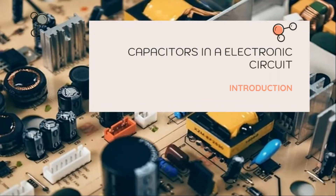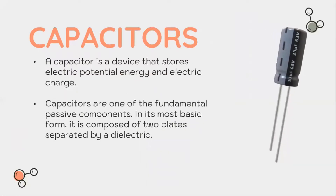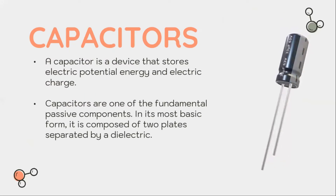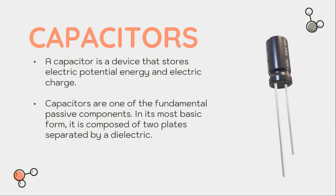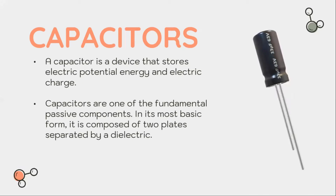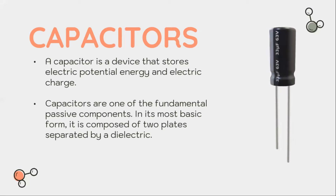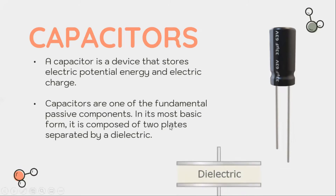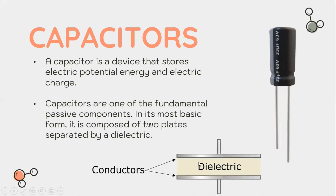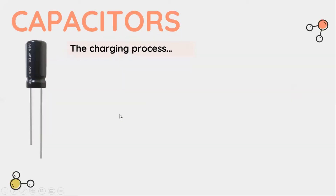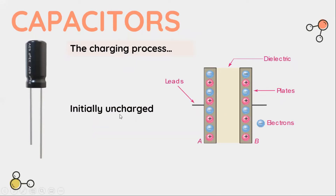A capacitor is a component whose main function is to store electric charge. It is a device that stores electric potential energy and electric charge. Capacitors are one of the fundamental passive components. In its most basic form, it is composed of two conducting plates separated by a dielectric. As you can see on the right side of the screen, this is an example of a capacitor — inside it we can see two conducting plates separated by a dielectric.